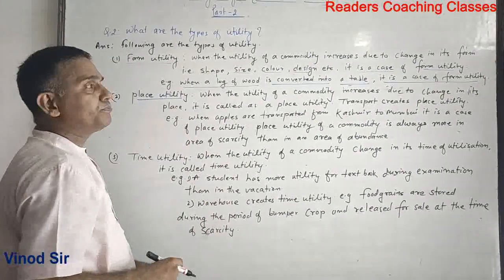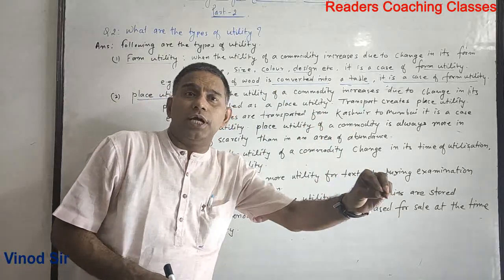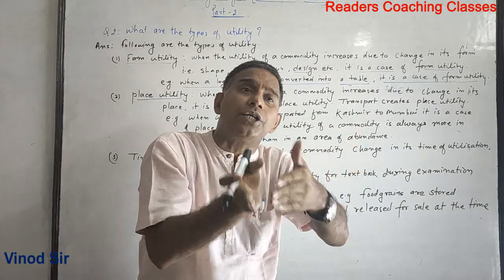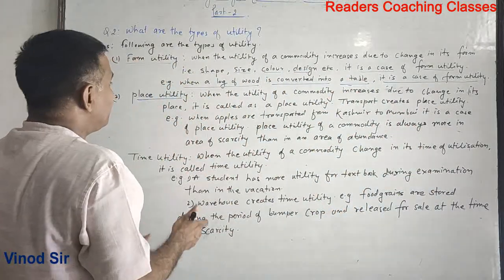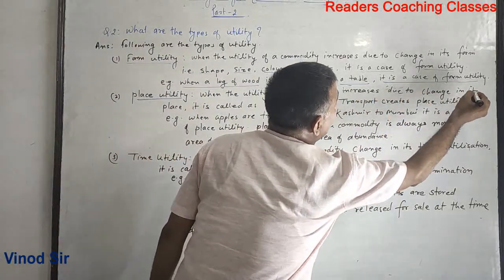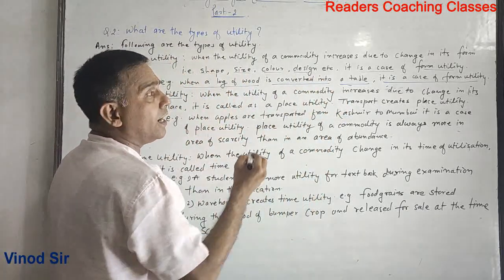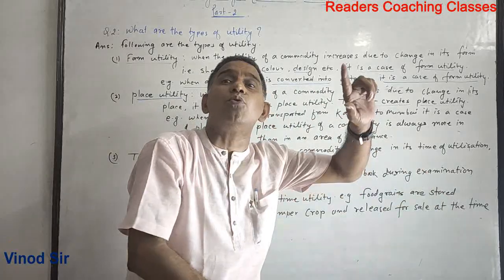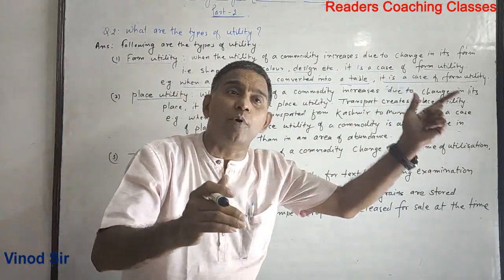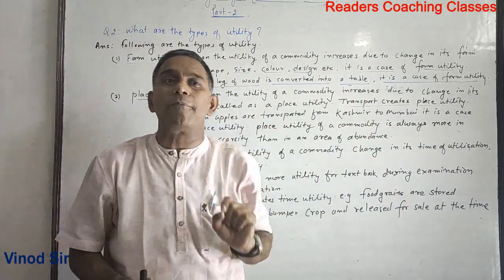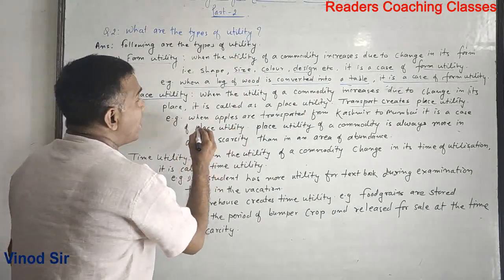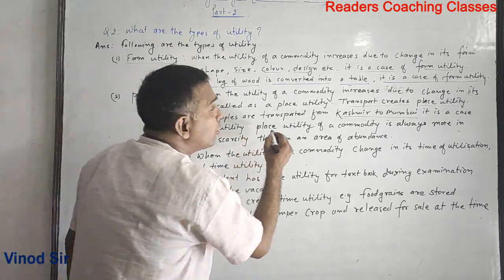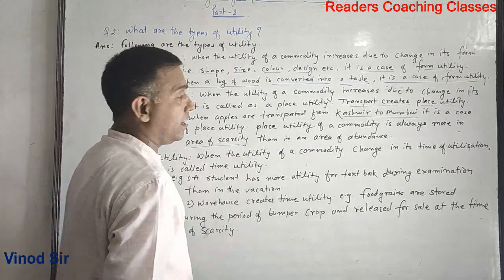The second type is place utility. When the utility of a commodity increases due to a change in its place, it is called place utility. Transport creates place utility. For example, when apples are transported from Kashmir to Mumbai, it is a case of place utility. Place utility of a commodity is always more in an area of scarcity than in an area of abundance.